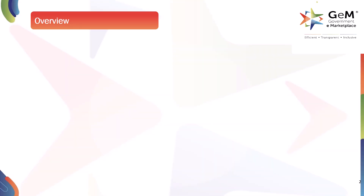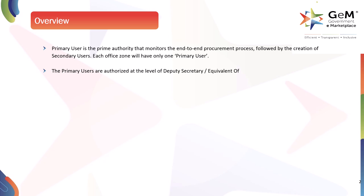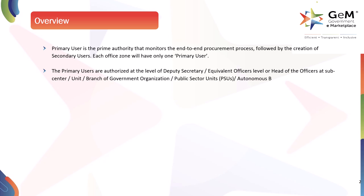In this module we will see: the primary user is the prime authority that monitors the end-to-end procurement process, followed by the creation of secondary users. Each office zone will have only one primary user. The primary users are authorized at the level of deputy secretary, equivalent officers level, or head of officers at sub-center, unit, branch of government organization, public sector units (PSUs), autonomous bodies, constitutional bodies, and statutory bodies.